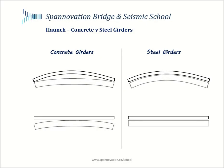Let's look into how haunch considerations differ depending upon the type of girder — either pre-stressed concrete or steel girders. I've got concrete girders on the left and steel girders on the right, showing a crest roadway curve. For steel girders, we know that we have the ability to build in the geometry of the vertical profile into the girder itself. Because of that, you end up with a fairly uniform haunch along the length of the entire girder.